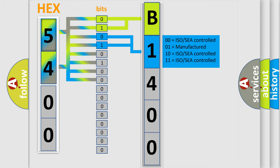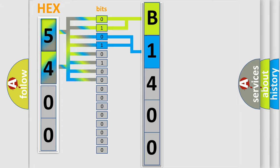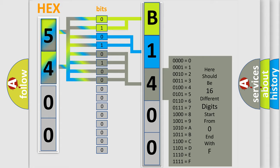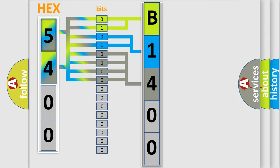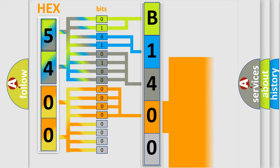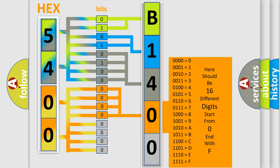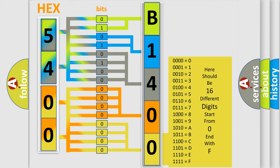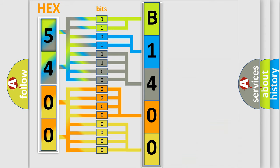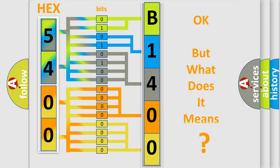The next two bits determine the second character. The last four bits of the first byte define the third character of the code. The second byte is composed of a combination of eight bits. The first four bits determine the fourth character, and the combination of the last four bits defines the fifth character. A single byte conceals 256 possible combinations.